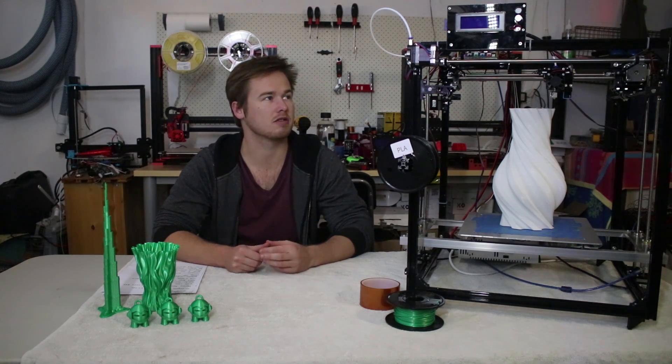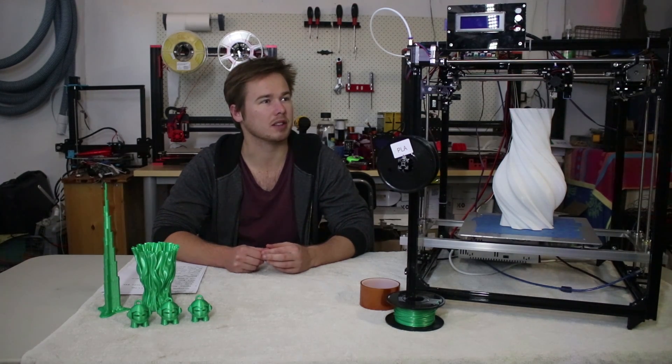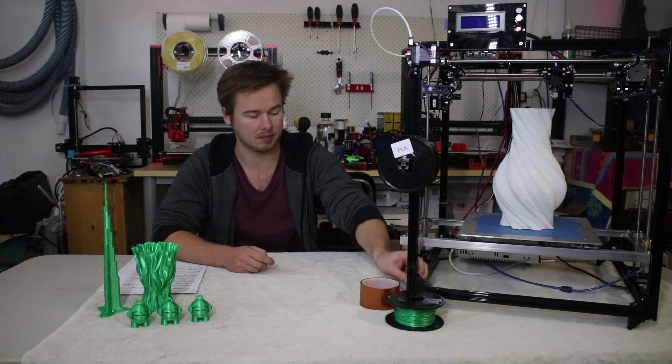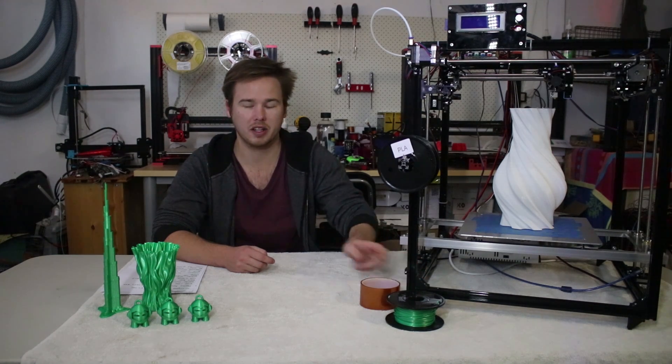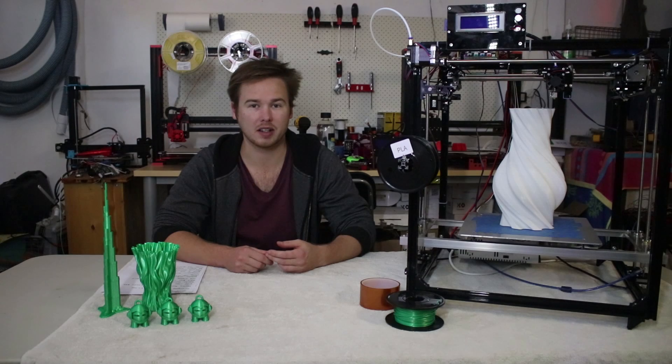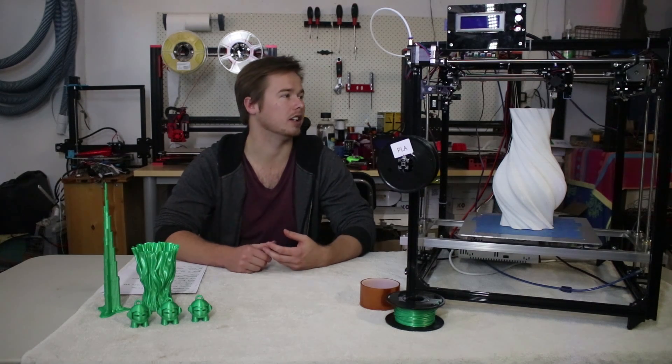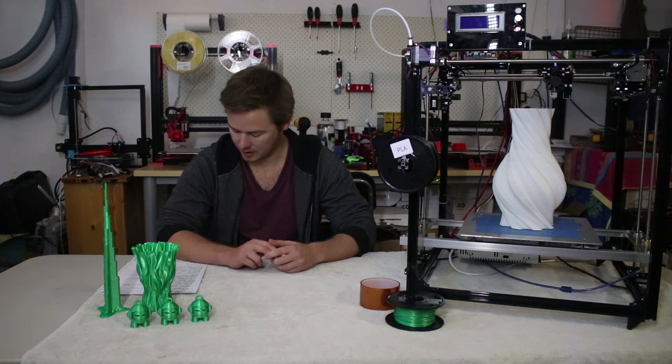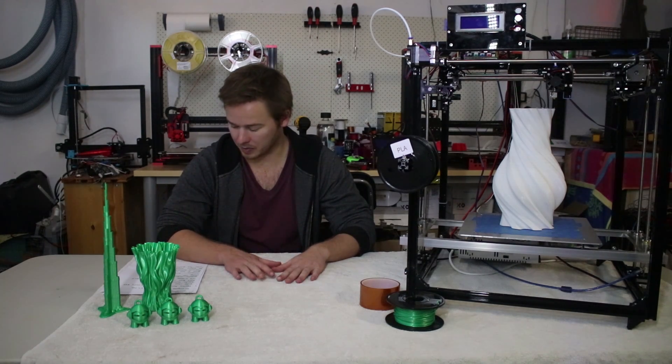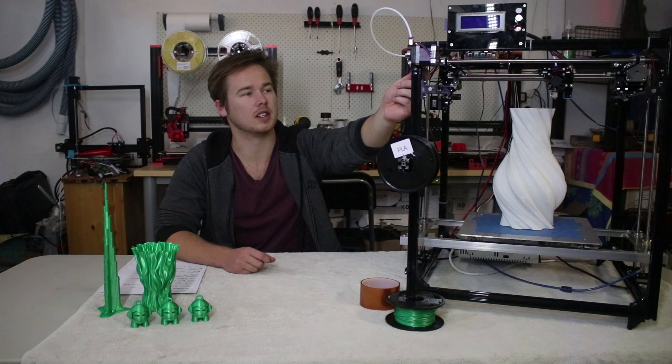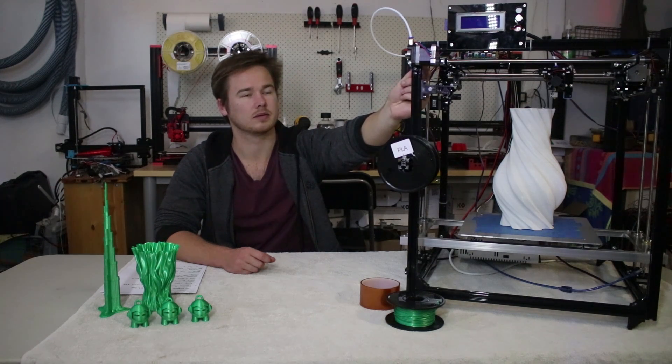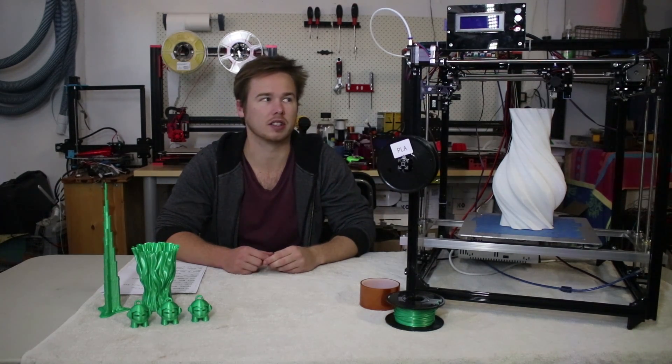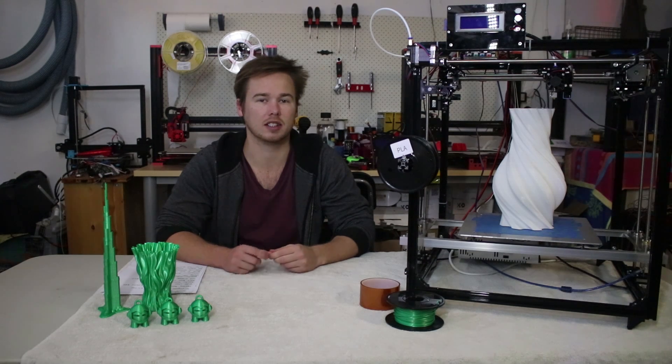The frame is 20-20 aluminum extrusion held together with 90 degree aluminum corner brackets. All the mounting parts for the hotend and the carriages are all 3mm acrylic. And the only 3D printed parts I found on the frame were the brackets for the bearings for the linear rods in the XY movement.